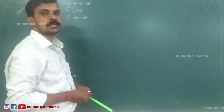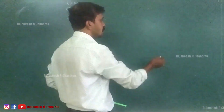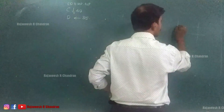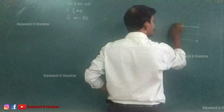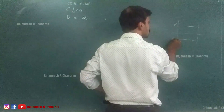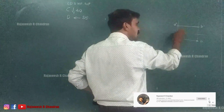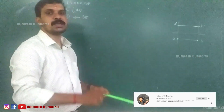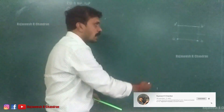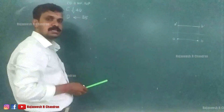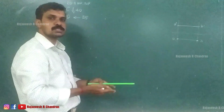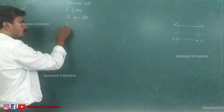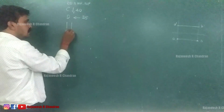What do we mean by the term 'distance between the projectors'? In the last question, we had the XY line and projections like this — A-dash and B-dash. The vertical line through A is called the projector through A, and the vertical line through B is the projector through B. In this question, the distance between the projectors through C and D is 65mm.